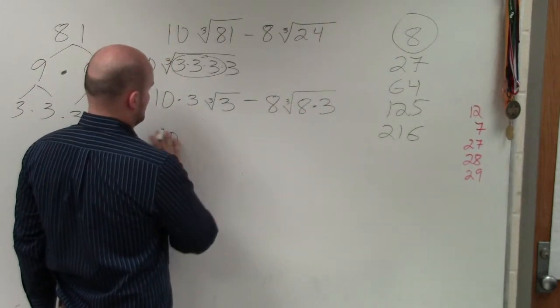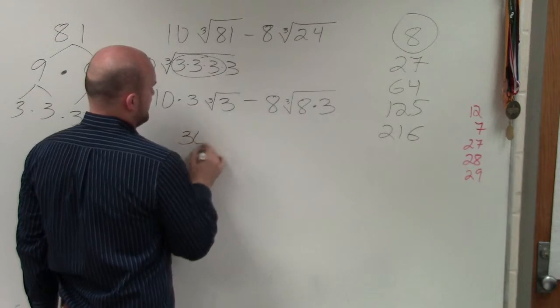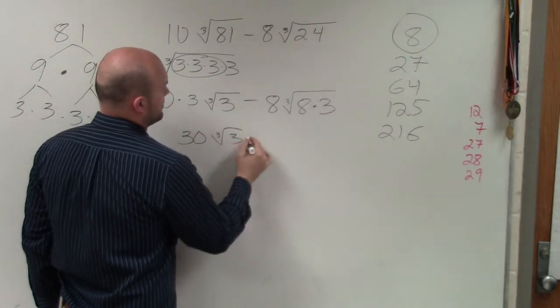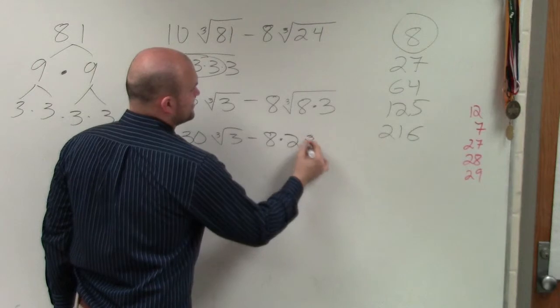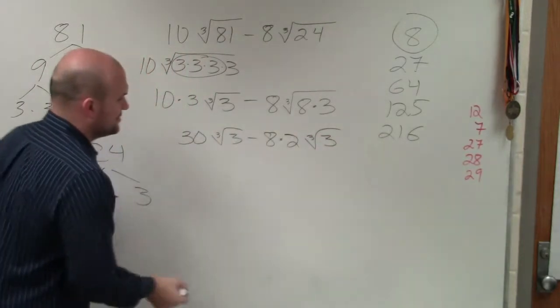So I have 10, or it's actually 10 times 3 is 30. 30 cube root of 3 minus 8 times 2 times the cube root of 3. 8 times 2 is 16.